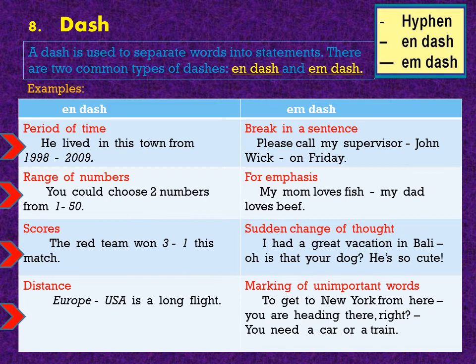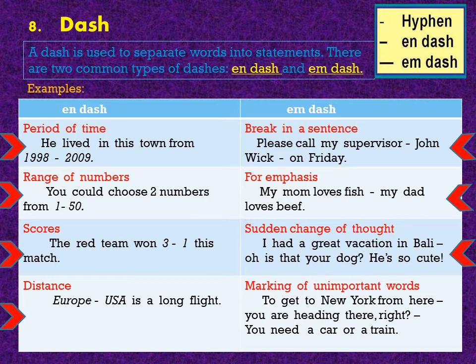Europe–USA is a long flight. For M dash: to indicate a break in a sentence — Please call my supervisor — Janik — on Friday. Or for emphasis: My mom loves fish — my dad loves beef. Sudden change of thought: I had a great vacation in Bali — oh, is that your dog? He's so cute. Marking of unimportant words: To get to New York from here — you are heading there, right? — you need a car or a train.